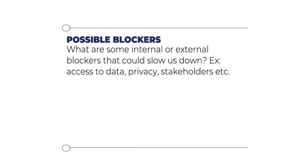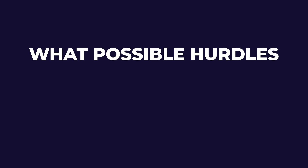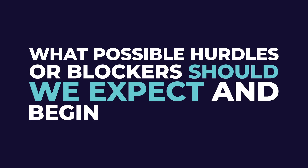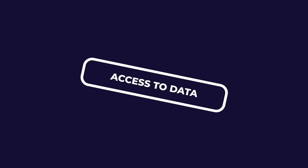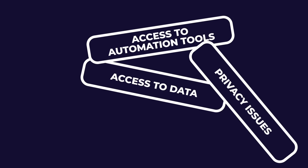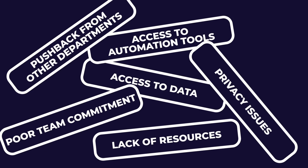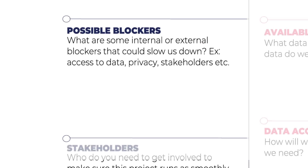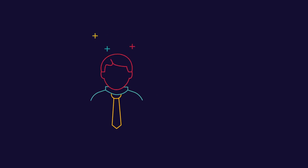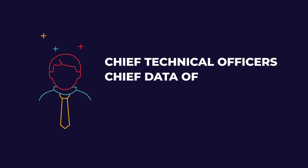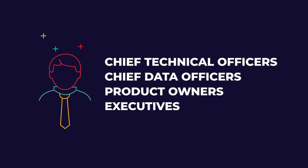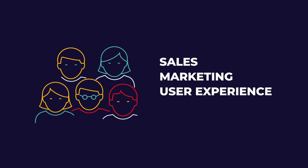Which leads us to possible blockers. What possible hurdles or blockers should we expect and begin to alleviate? Access to data, access to automation tools, privacy issues, lack of resources, poor team commitment, pushback from other departments — list anything that could block your project. Which then leads us to stakeholders: which internal people should we involve early on to remove possible blockers and get support? Some usual suspects are CTOs, chief data officers, product owners, executives, but also sales, marketing, UX, or CRM teams.